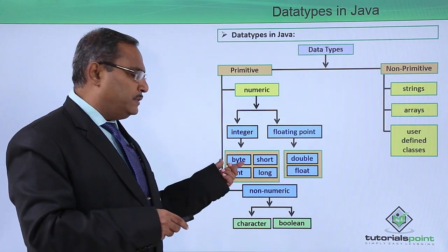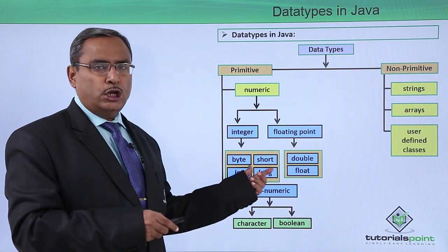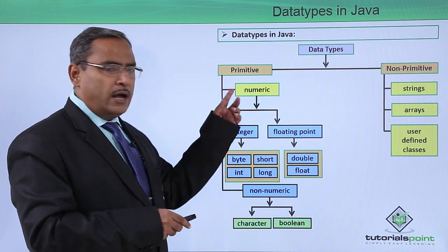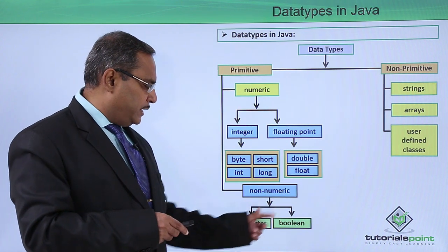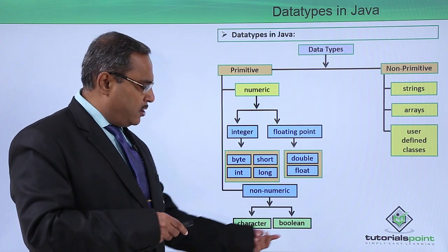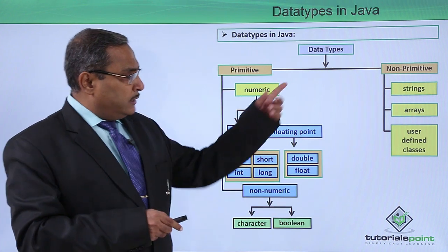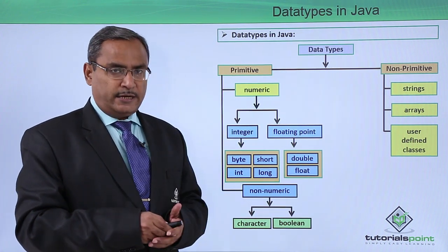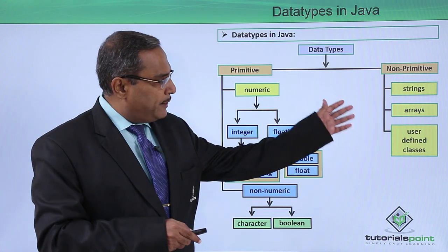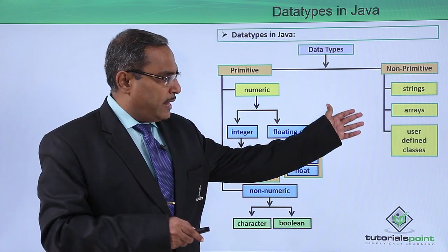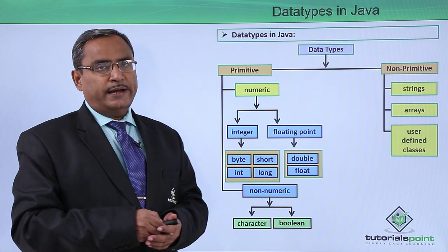Under the integer category, we can have byte, short, int, and long — these all fall under numeric data types. For non-numeric data types, we can have characters and the boolean data type. Under user-defined data types, that is ADT or non-primitive data types, we have categories like strings, arrays, and user-defined classes.